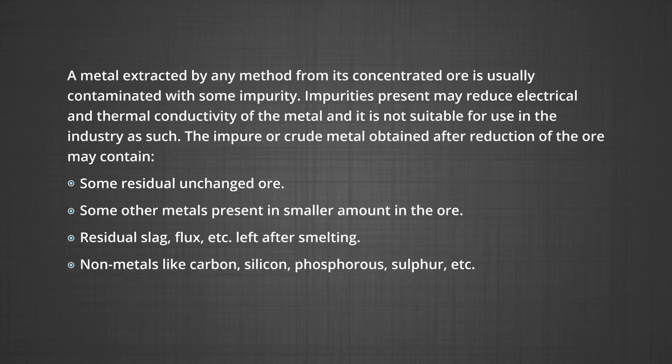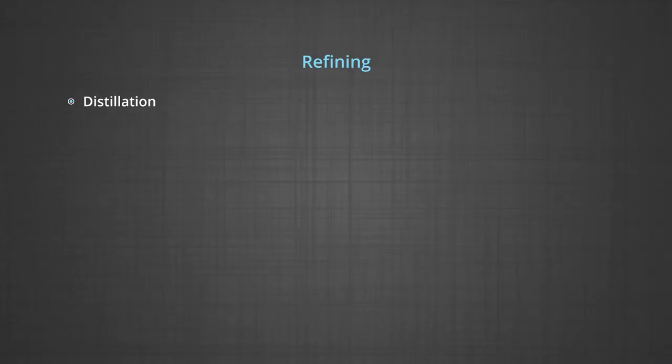Non-metals like carbon, silicon, phosphorus, sulfur, etcetera. For obtaining metals of high purity, several techniques are used depending upon the difference in the properties of the metal and the impurity.